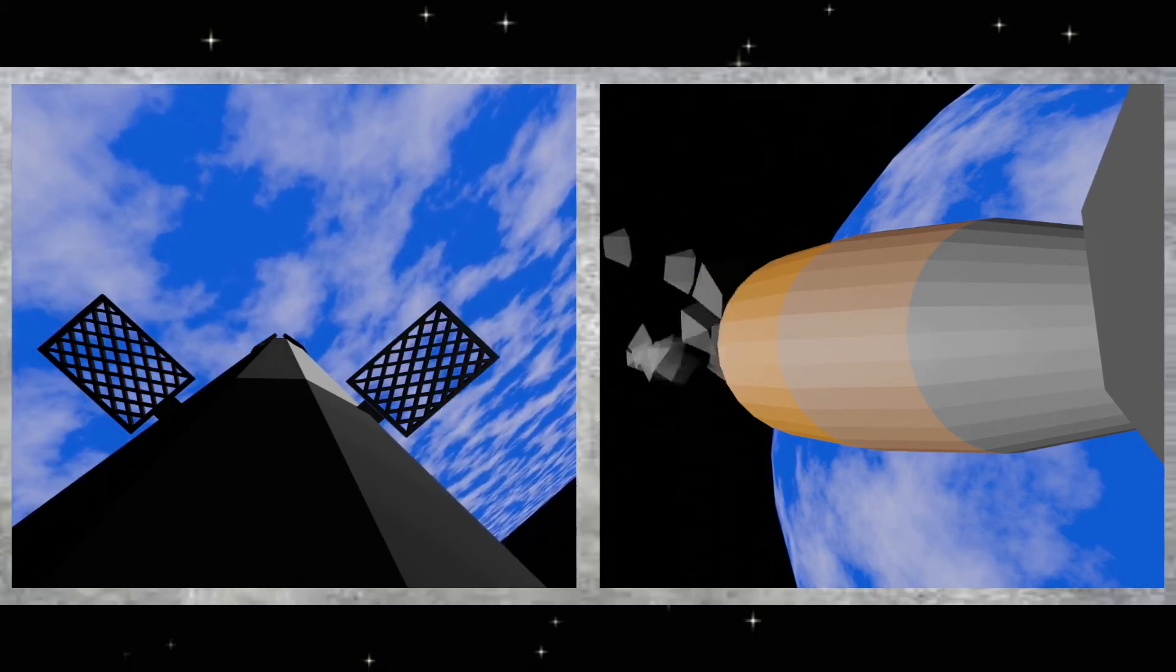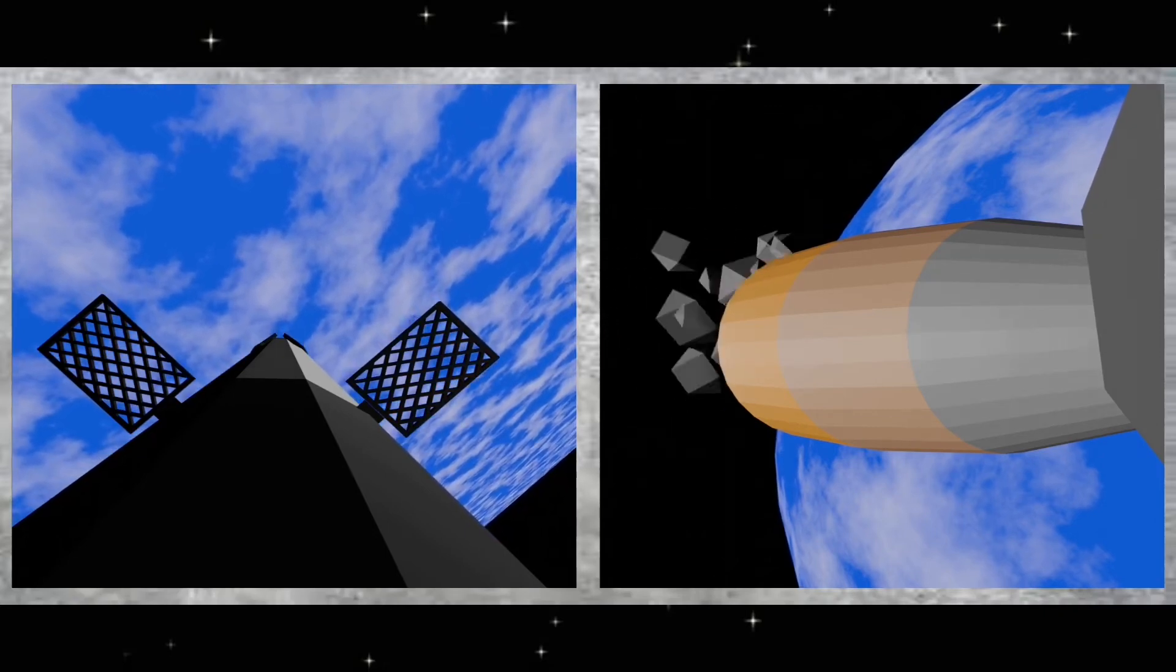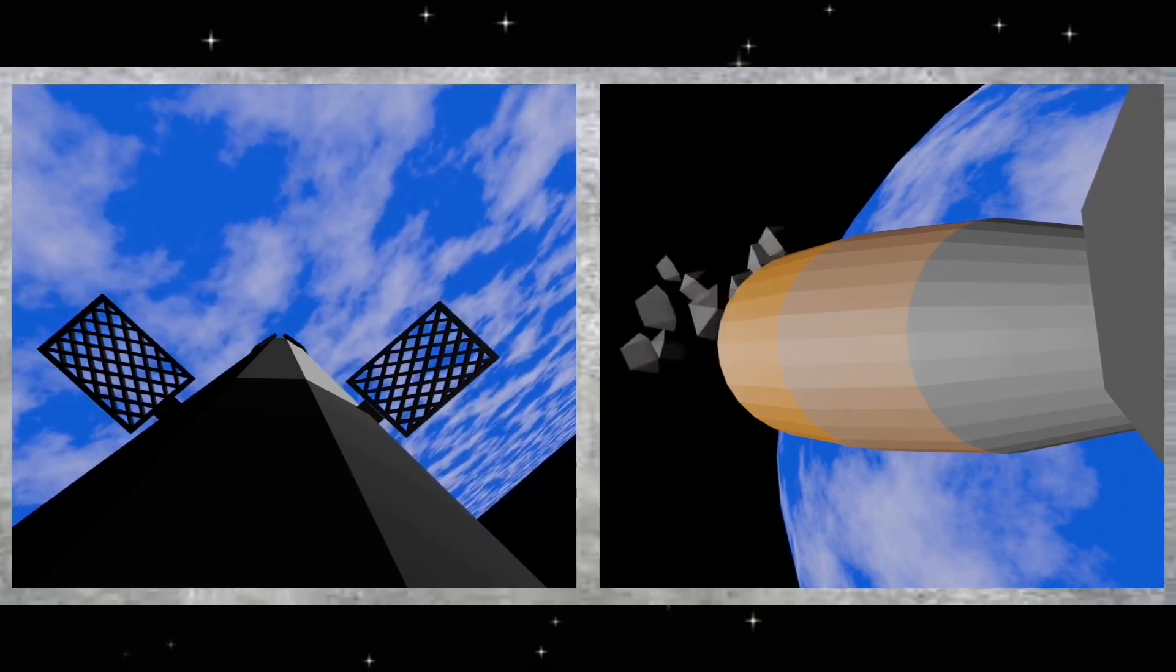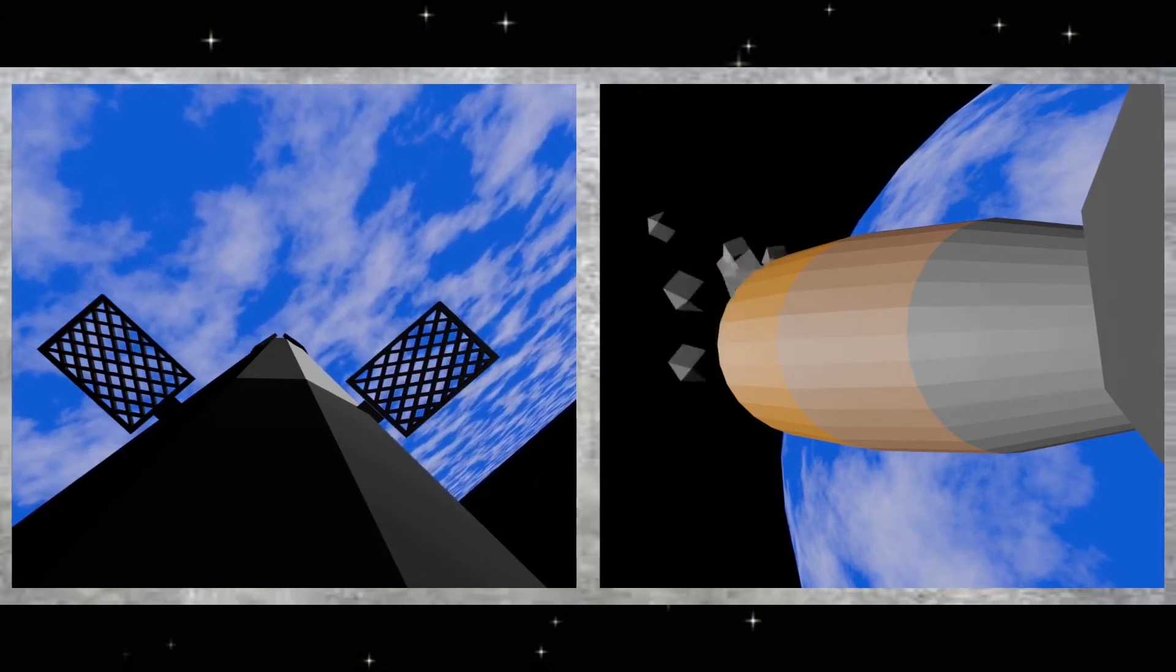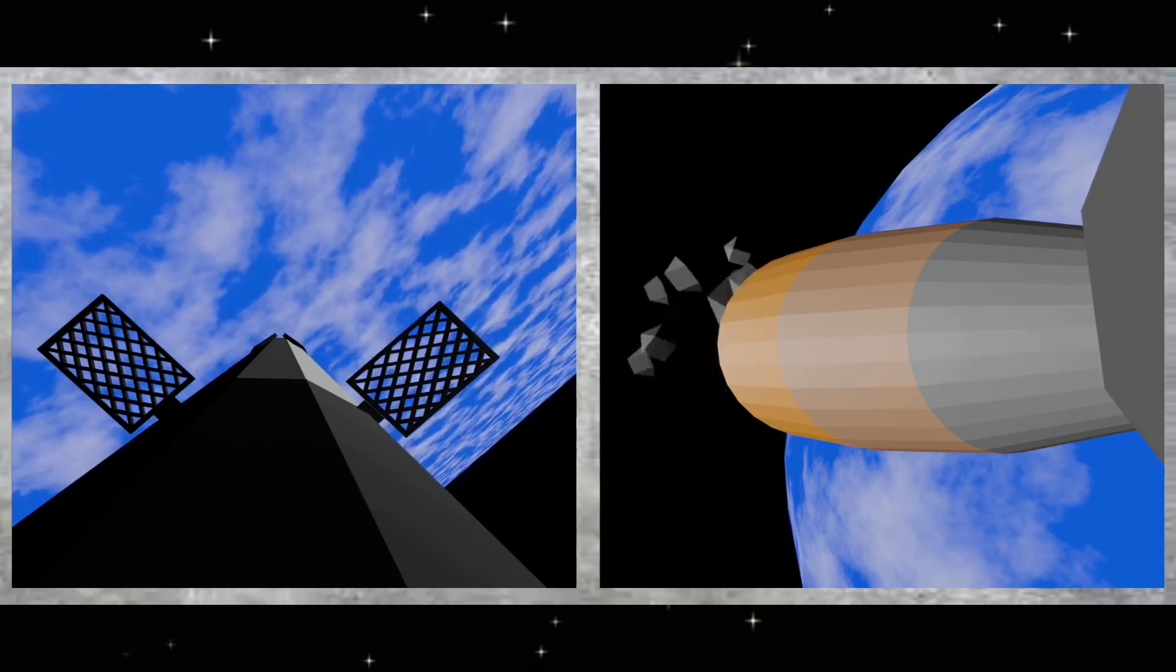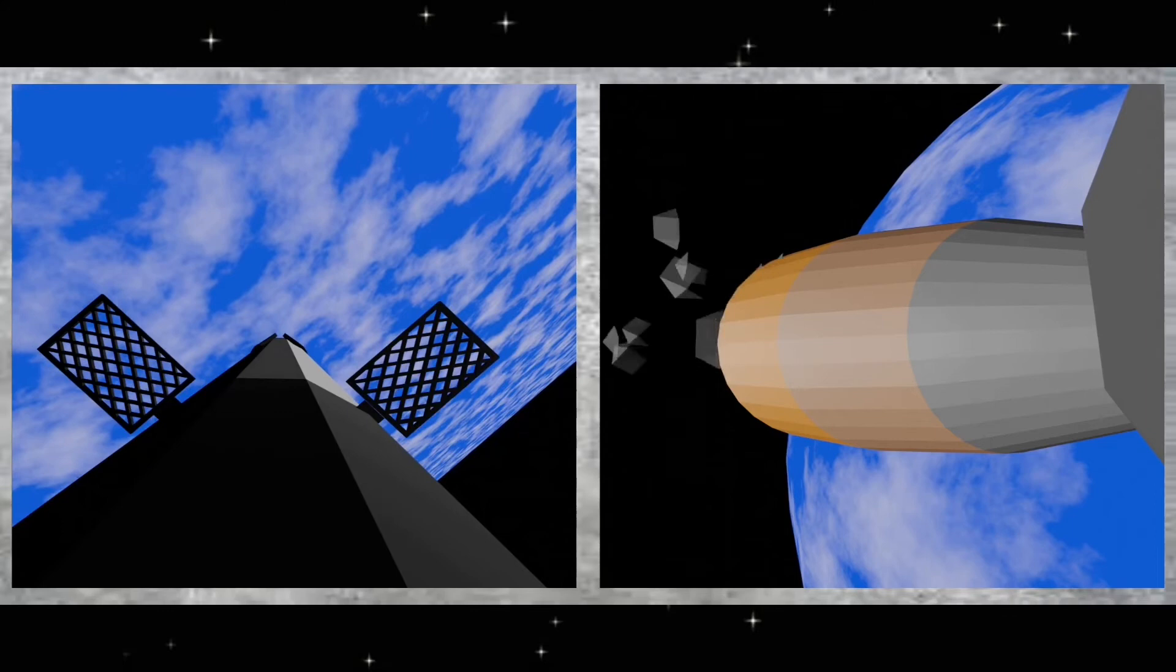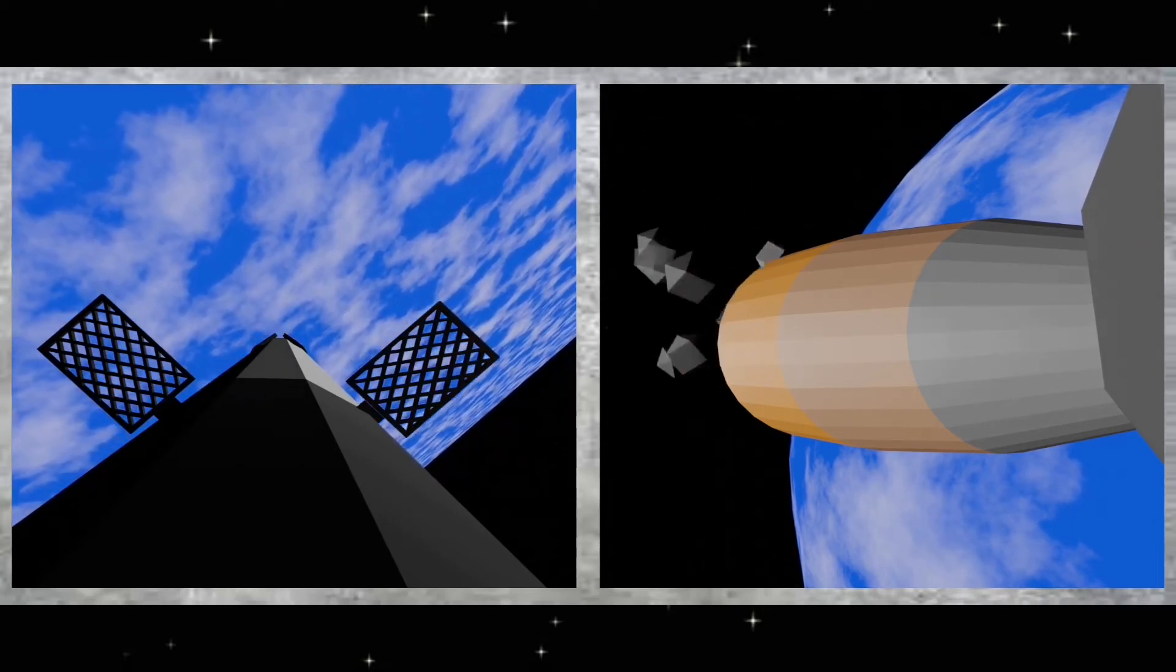As for the second stage, MVAC performance looks nominal. Just a few seconds after we finish the stage one entry burn, we'll be shutting off the second stage Merlin vacuum engine and enter a small coast phase. Again, we'll need to relight this engine later on in the mission to get to our eventual destination orbit.